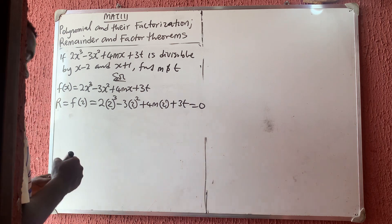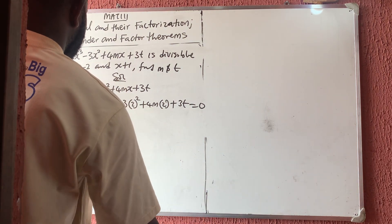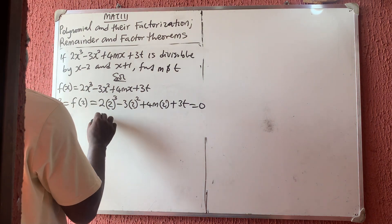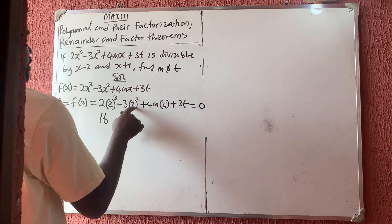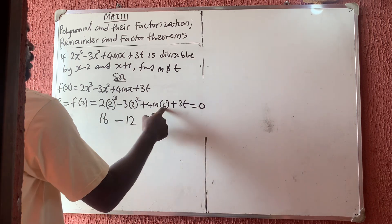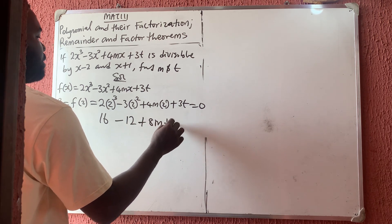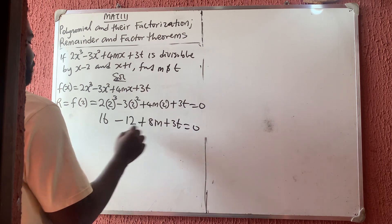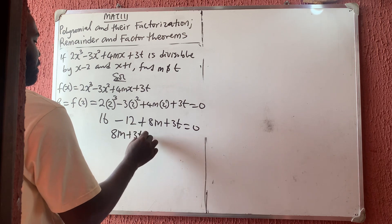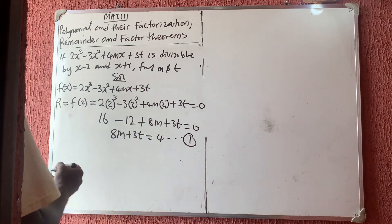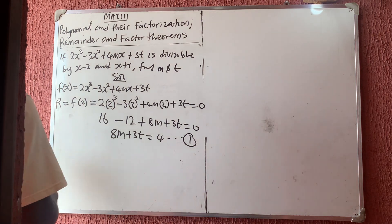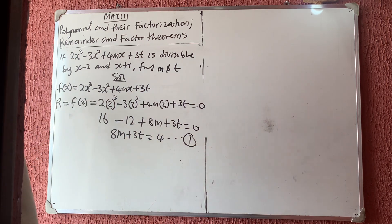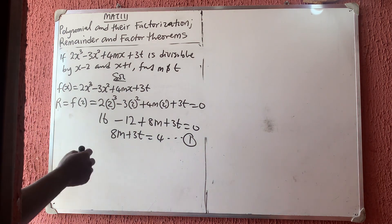Computing f(2): 2 times 2 cubed is 16, minus 3 times 4 is 12, plus 8m plus 3t equals zero. So 16 minus 12 plus 8m plus 3t equals zero, giving us 8m plus 3t equals 4 — this is equation 1. Please note there may be a small error in the written work, so check the calculation.